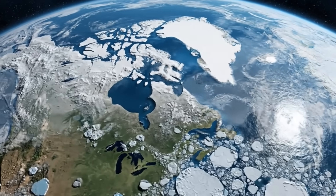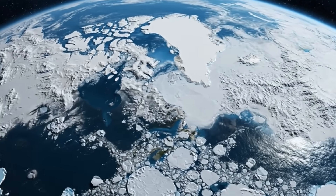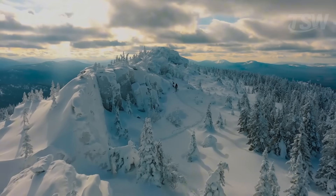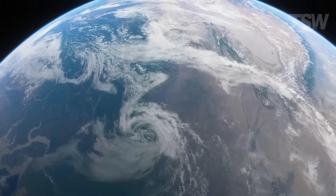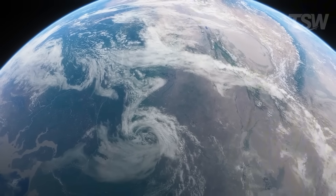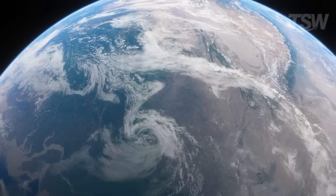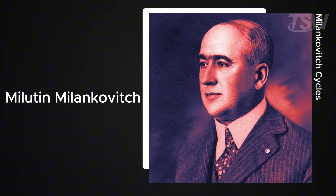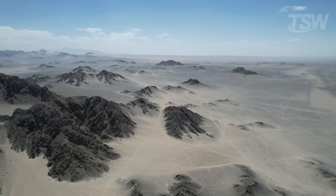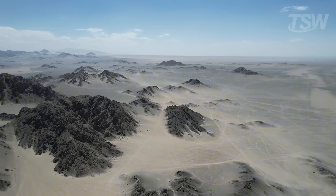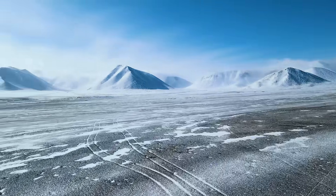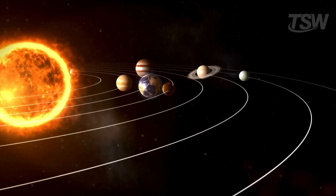Earth has always gone through climate changes throughout its history, from ice ages to warmer and wetter periods. But what exactly causes such dramatic shifts in the climate? For a long time, this was a question without a clear answer. It wasn't until the 20th century that a Serbian engineer and mathematician named Milutin Milankovic proposed a surprisingly elegant explanation, one not based on processes happening on Earth's surface, but on the movements the planet makes around the Sun.